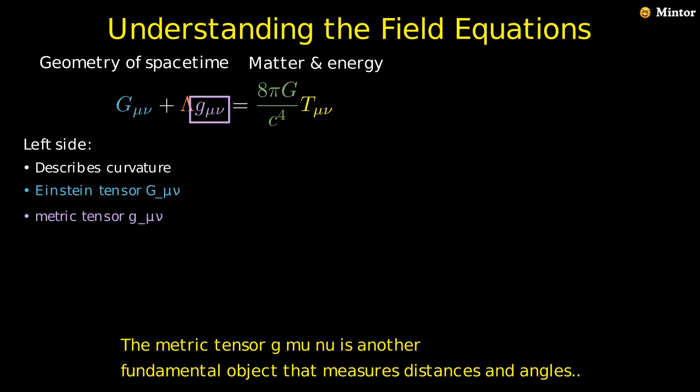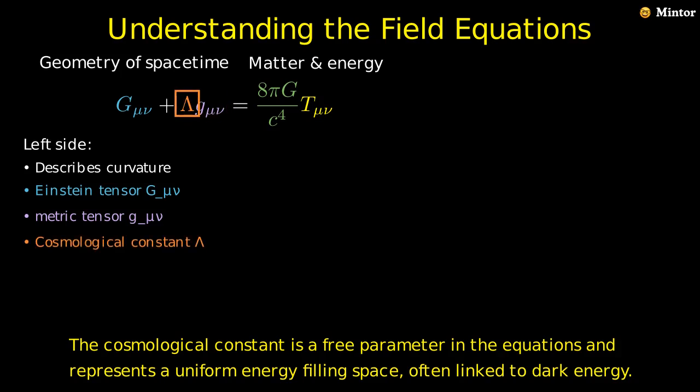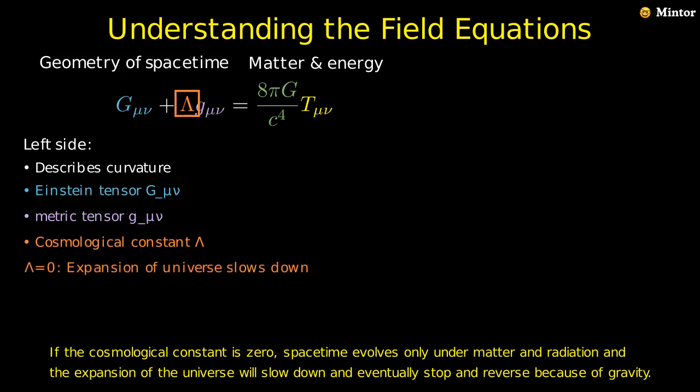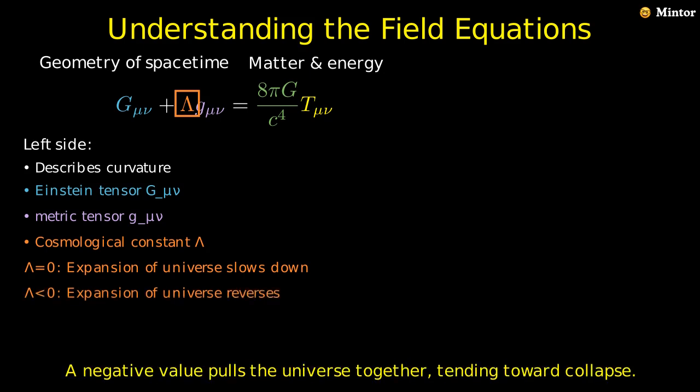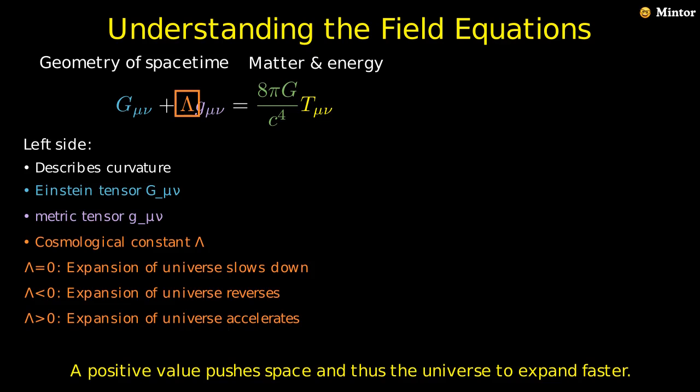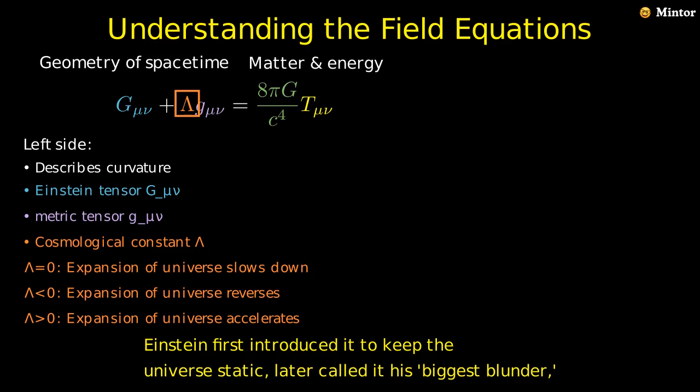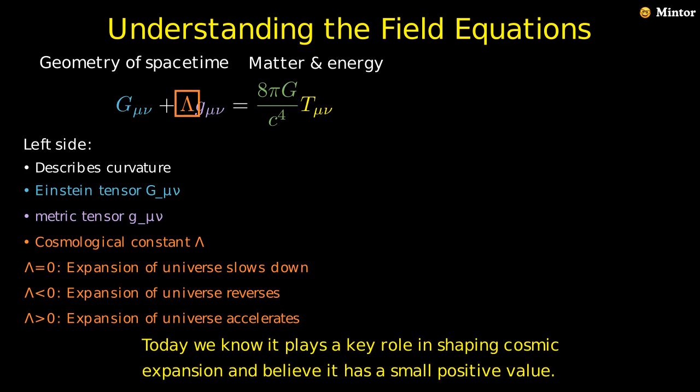The metric tensor g_μν is another fundamental object that measures distances and angles. The cosmological constant is a free parameter in the equations and represents a uniform energy filling space, often linked to dark energy. If the cosmological constant is zero, spacetime evolves only under matter and radiation, and the expansion of the universe will slow down and eventually stop and reverse because of gravity. A negative value pulls the universe together, tending toward collapse. A positive value pushes space, and thus the universe to expand faster. Einstein first introduced it to keep the universe static, later called it his biggest blunder. Today we know it plays a key role in shaping cosmic expansion and believe it has a small positive value.